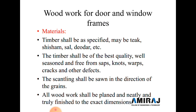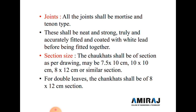The scantling shall be sawn in the direction of the grains, and all wooden work shall be planned neatly and truly finished to the exact dimensions. All joints shall be of the mortise and tenon type, and shall be neat, strong, and accurately fitted with each other, coated with white lead before being fitted together. Bonding materials like glue, Fevicol, and other chemicals, as well as nails, are also used for jointing.